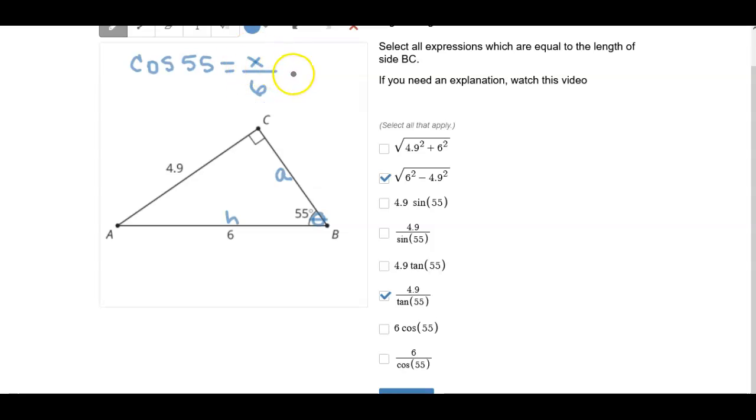And since x is in the numerator this time, we want to multiply by 6. And so we get x is equal to the cosine of 55 times 6. So it can't also be 6 divided by the cosine of 55 and 6 times the cosine of 55. So it can only be one of these two. So the right one is this one, and we've got them all right.